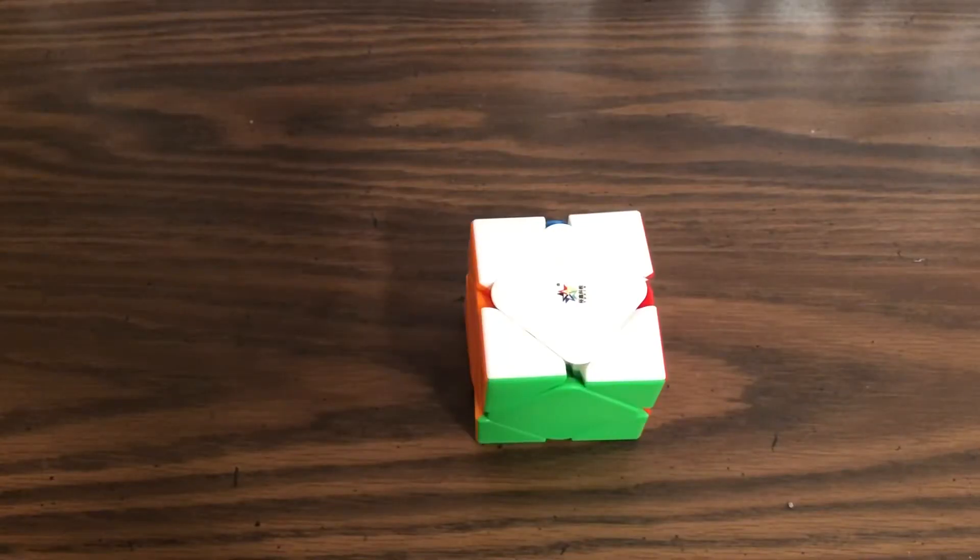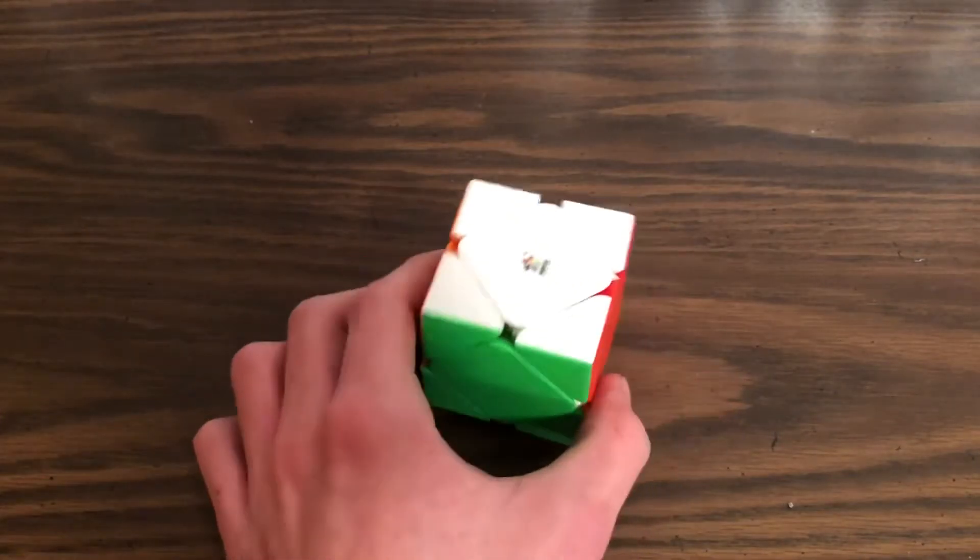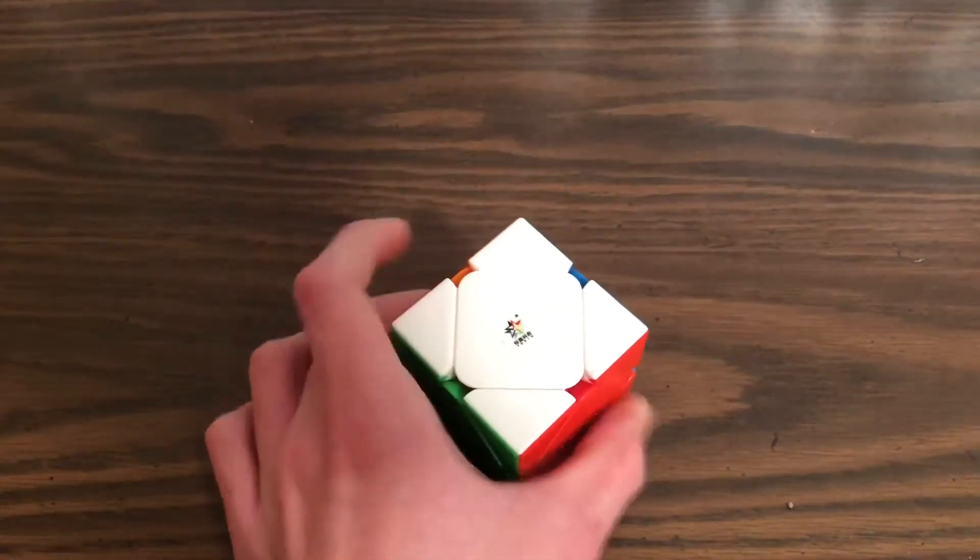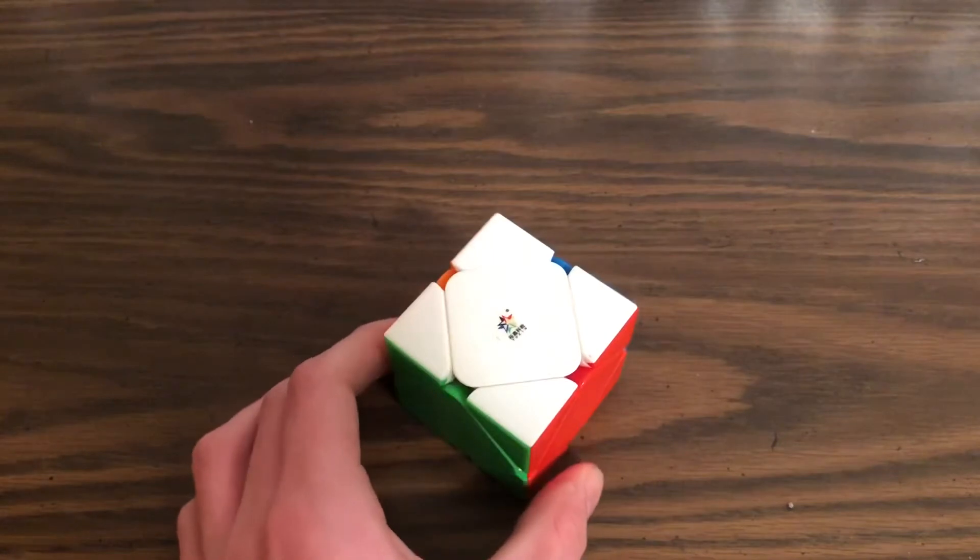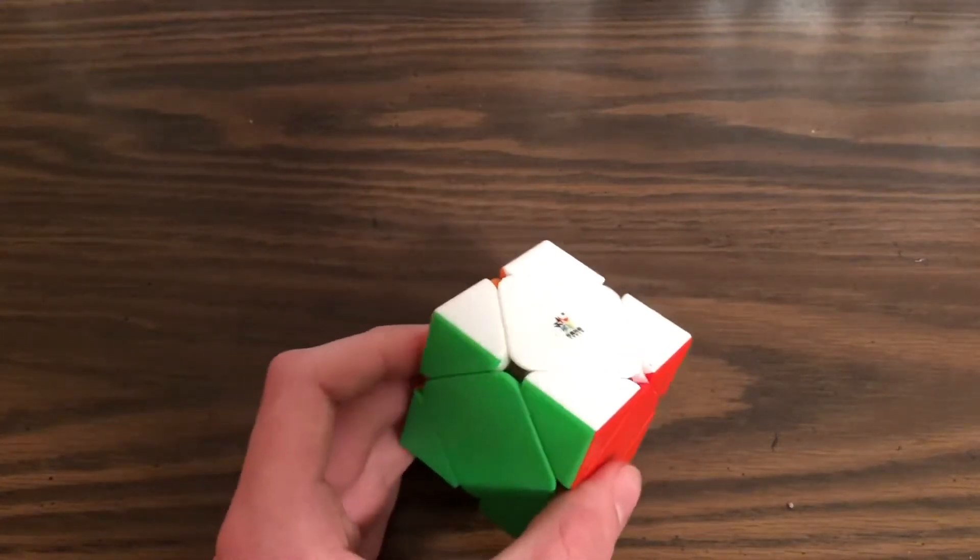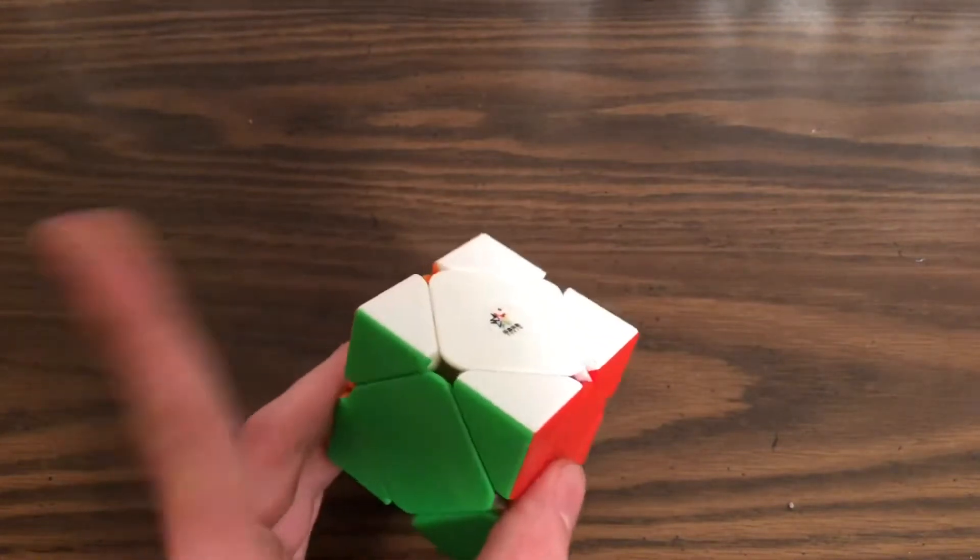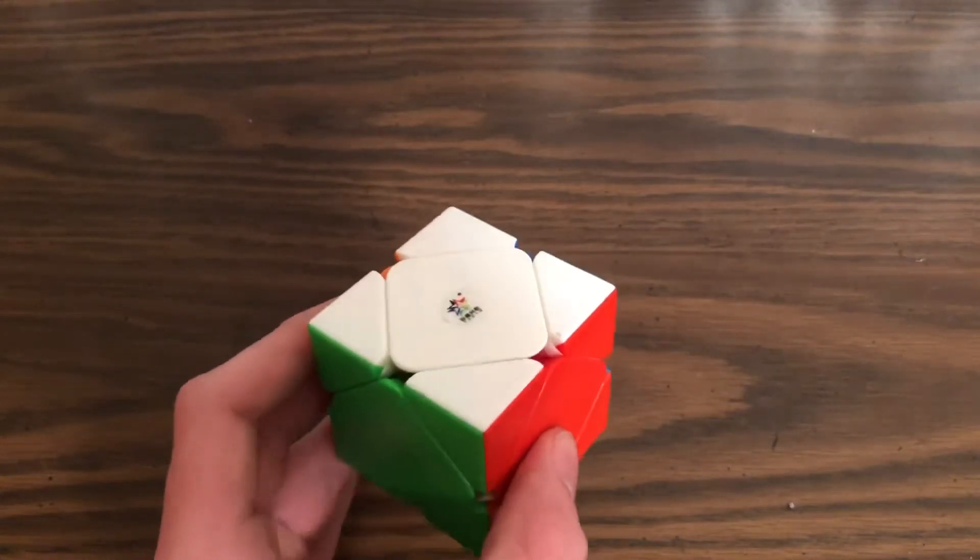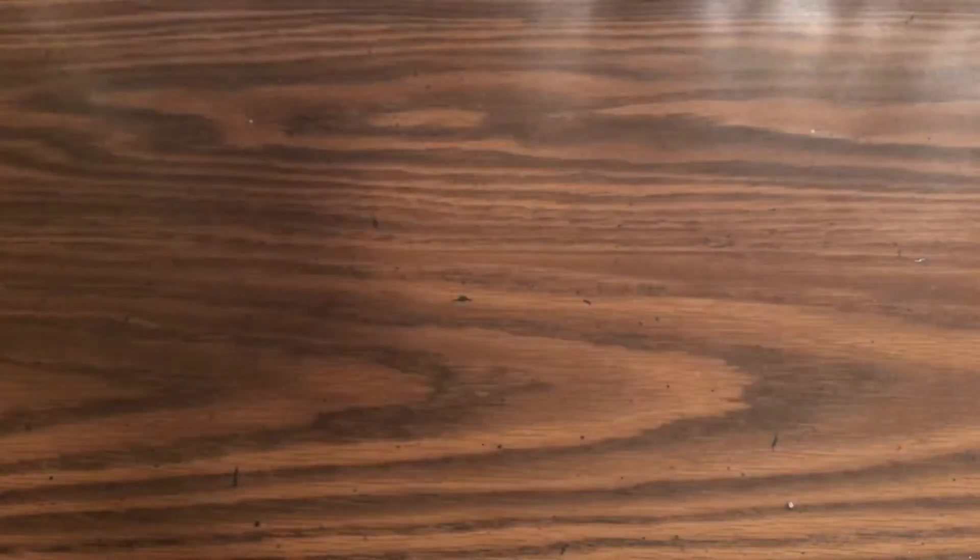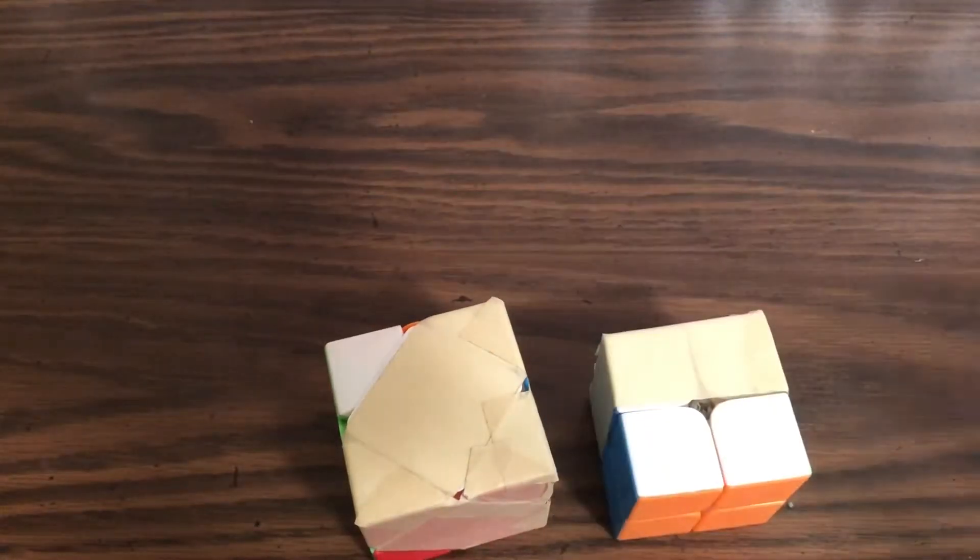Once you get to know it, the SCUBE is actually a pretty easy puzzle to solve. I'd say it's one of the easiest puzzles to solve in the WCA. But the hardest part for people to figure out is how to turn it. It amazes me how few tutorials actually go over this, so today I'm going to fix that.